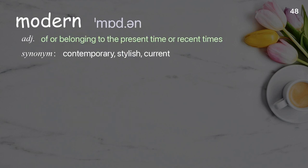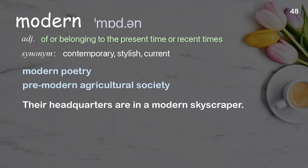Modern: of or belonging to the present time or recent times. Examples: modern poetry, pre-modern agricultural society. Their headquarters are in a modern skyscraper.